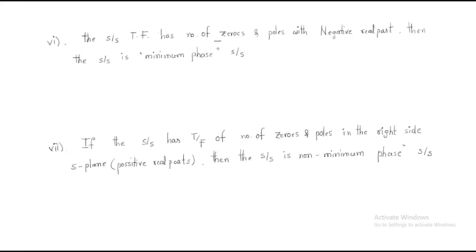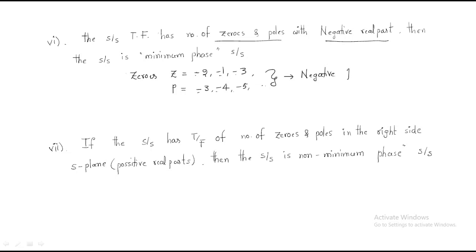Sixth property: if the system's transfer function has all zeros and poles with negative real parts — for example zeros at minus 2, minus 1, minus 3 and poles at minus 3, minus 4, minus 5 — all in the negative real axis, then the system is known as the minimum phase system. The poles and zeros must all be located on the negative real axis for a system to be called a minimum phase system.